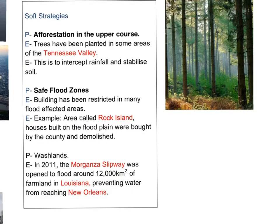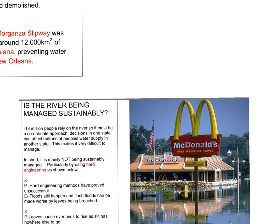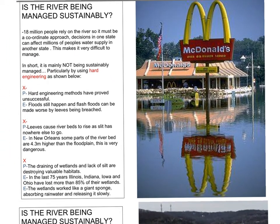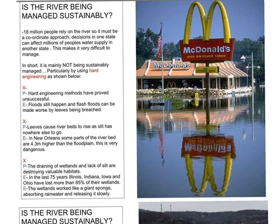The key to this case study is assessing the sustainability of these measures. Is the river being managed sustainably? A lot of evidence suggests it has not been managed sustainably. Hard engineering strategies have generally proved unsuccessful. Levees cause riverbanks to rise as silt has nowhere else to go, leading in some cases to riverbanks being lower than the river level itself — up to 4.3 metres lower in New Orleans. If the levee is breached, this leads to very serious flooding. The drainage of wetlands and lack of silt are also destroying valuable habitats, as the natural flooding process cannot happen when the river is enclosed by levees.